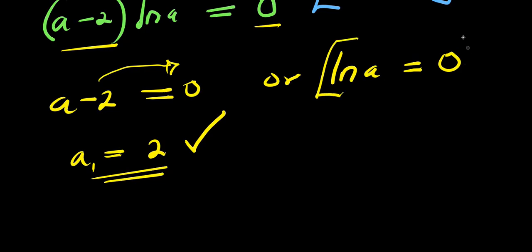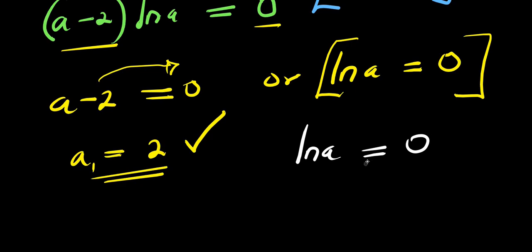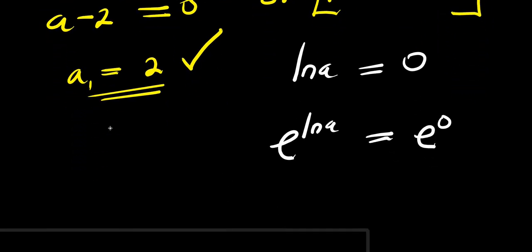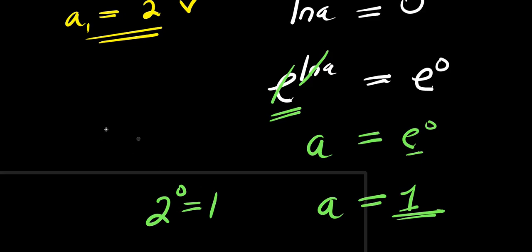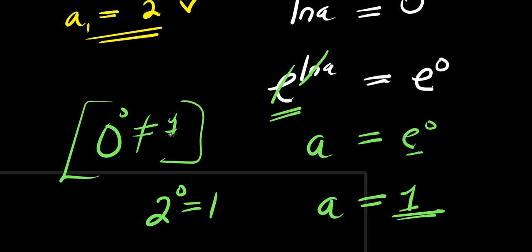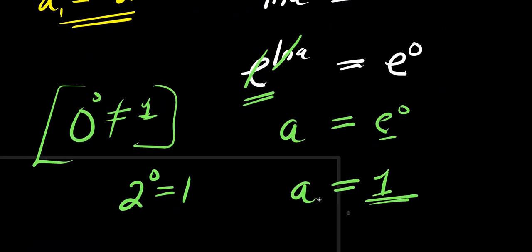Now solving ln(a) equals 0: to eliminate the natural log, we exponentiate both sides using e, giving e^(ln a) equals e^0. Since e^(ln a) cancels to a, we have a equals e^0. Any number raised to the power of 0 equals 1 — with the only exception being 0^0. So a equals 1. This is our second solution, a₂ equals 1.